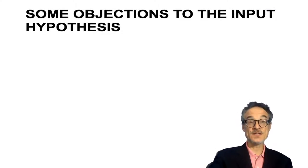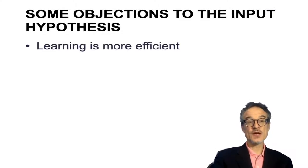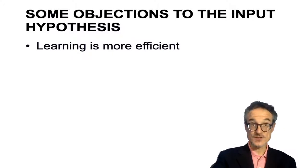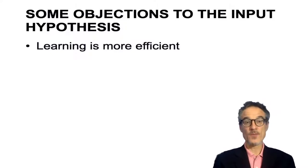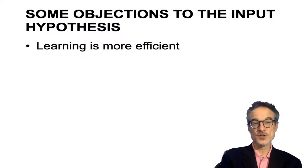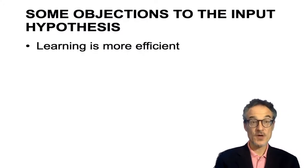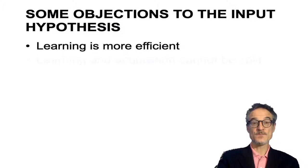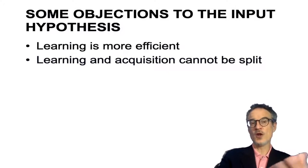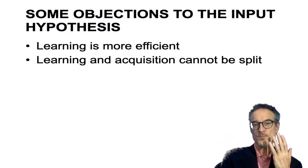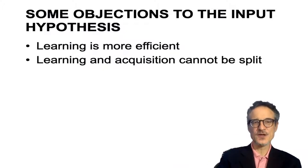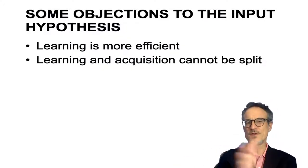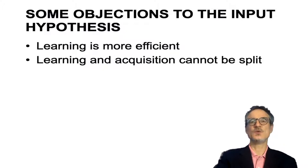Not everybody believes this, and one objection is that learning is more efficient. You can acquire a language, but it's going to take you a long time. If you sit down and learn a few words and a few bits of grammar, you can put them together and do something, and this may be more efficient. Another argument is that you can't always say whether something is learning or acquisition — you can't neatly split them into two things.